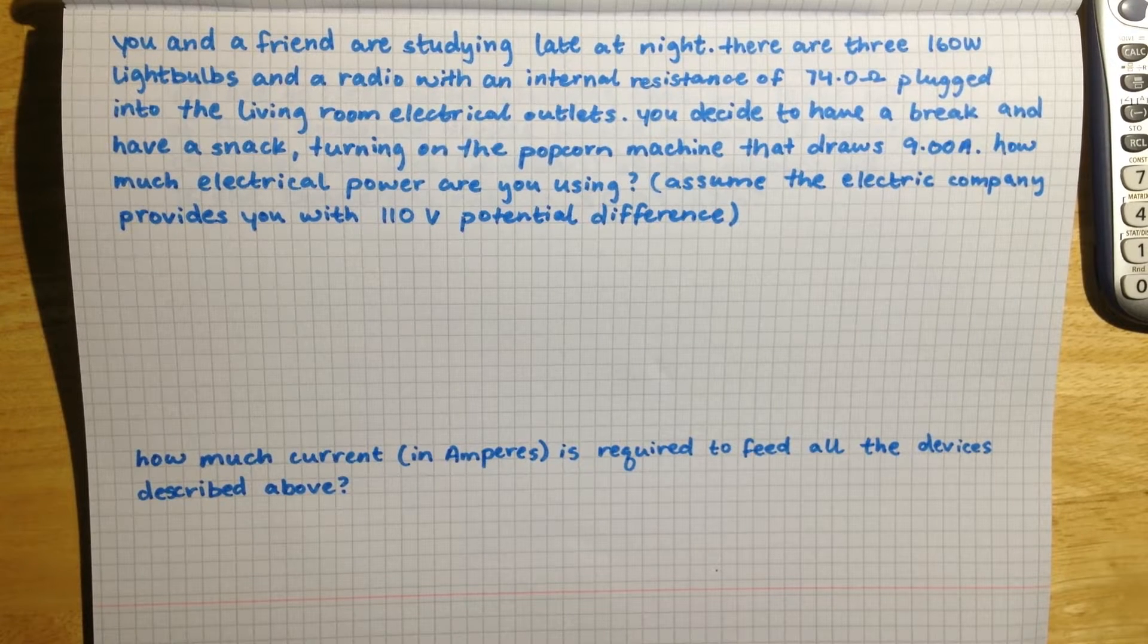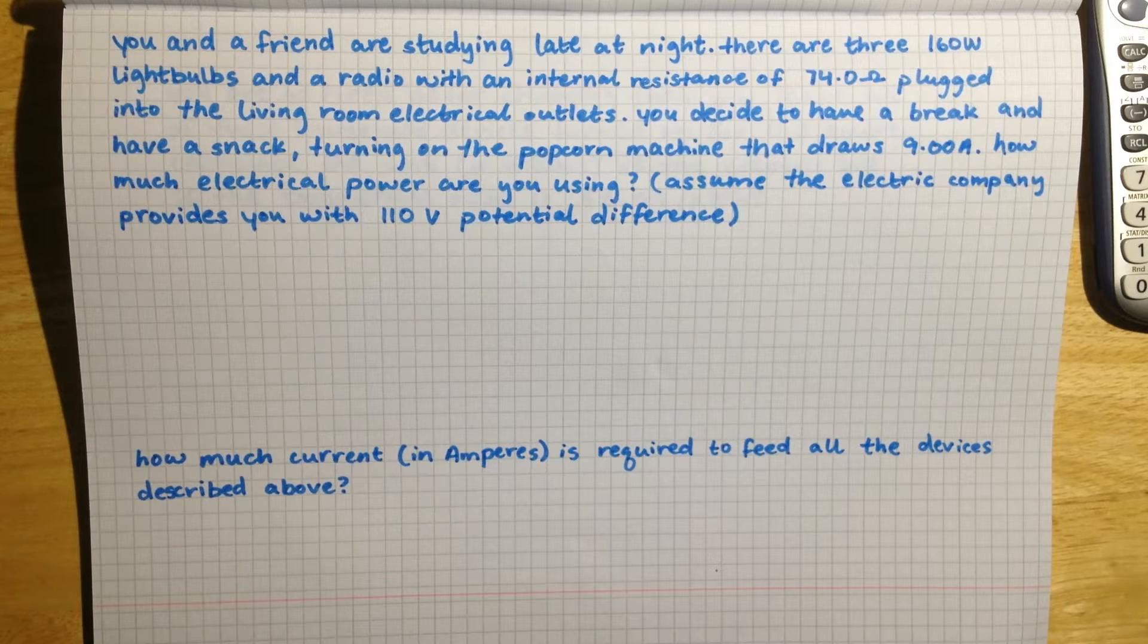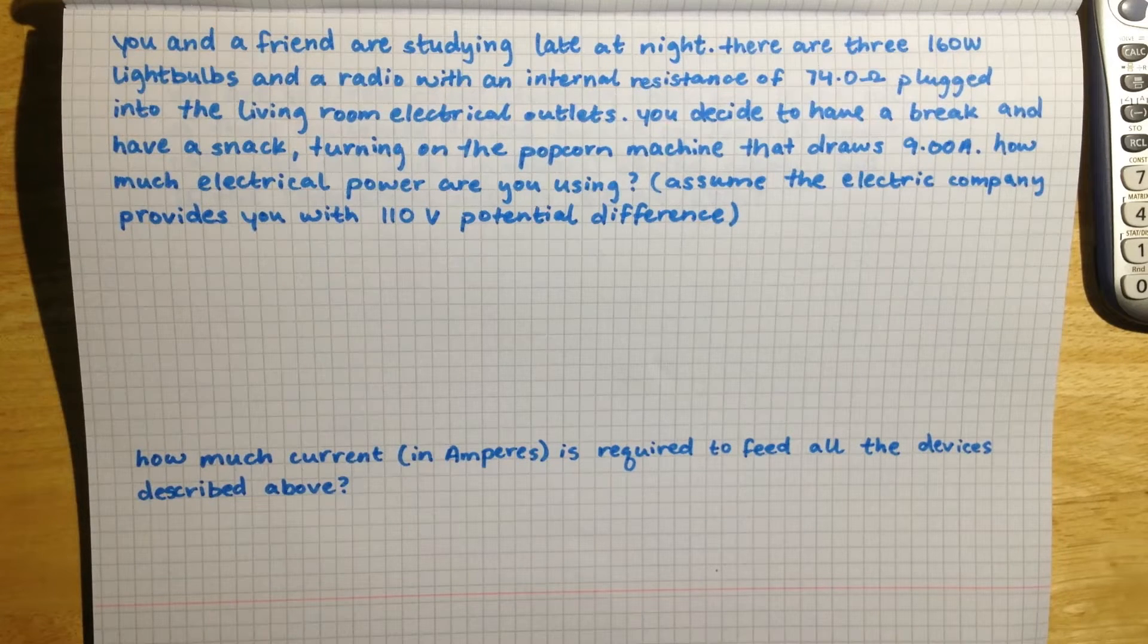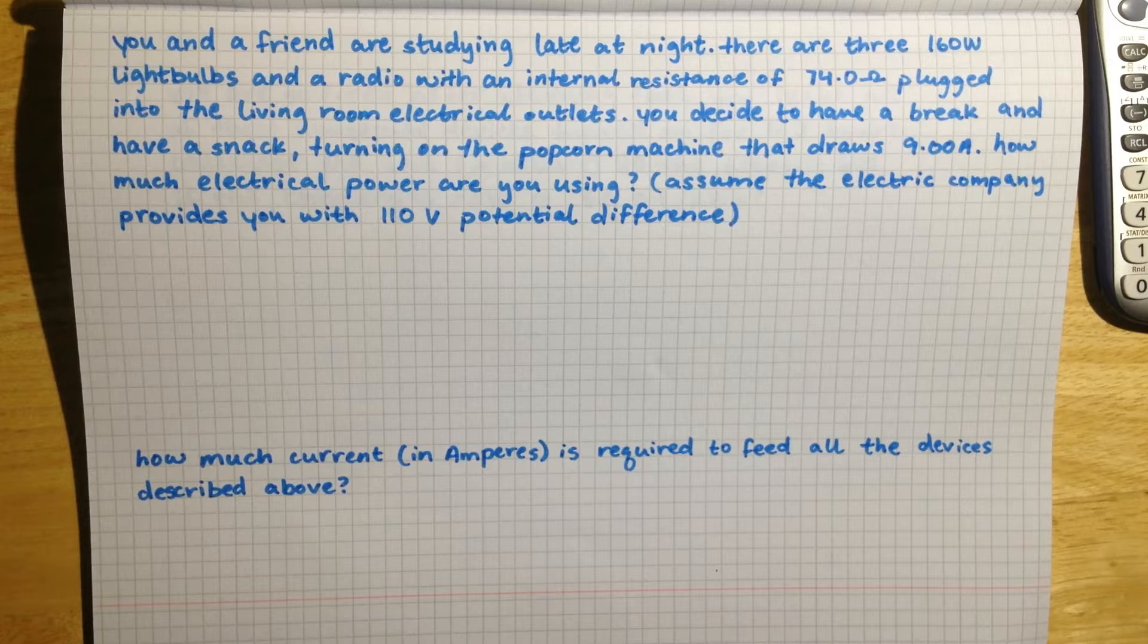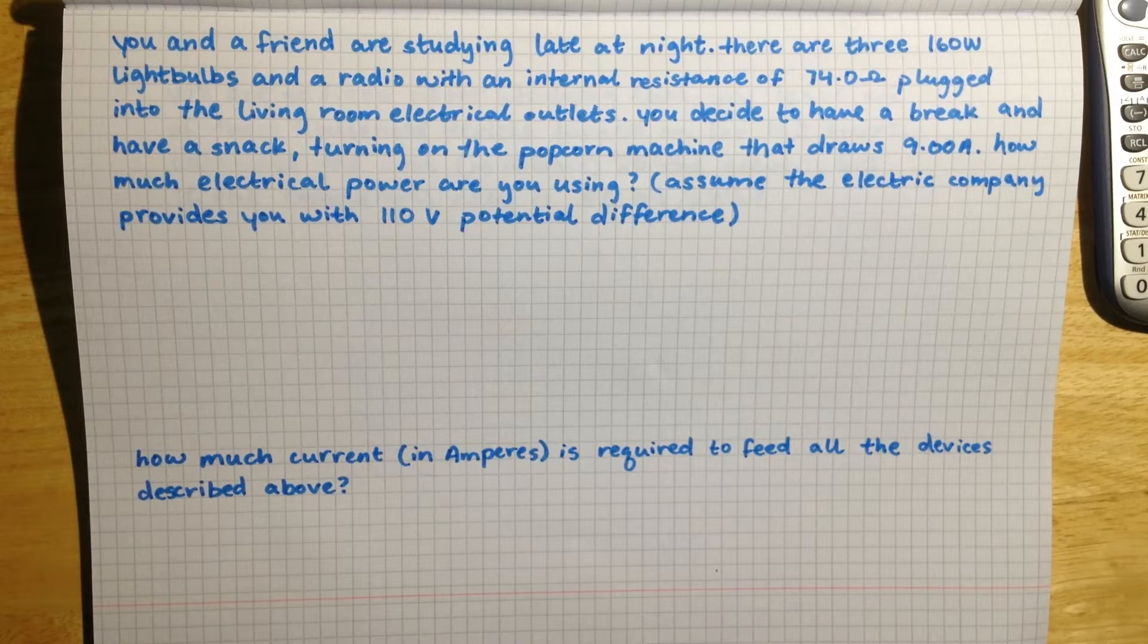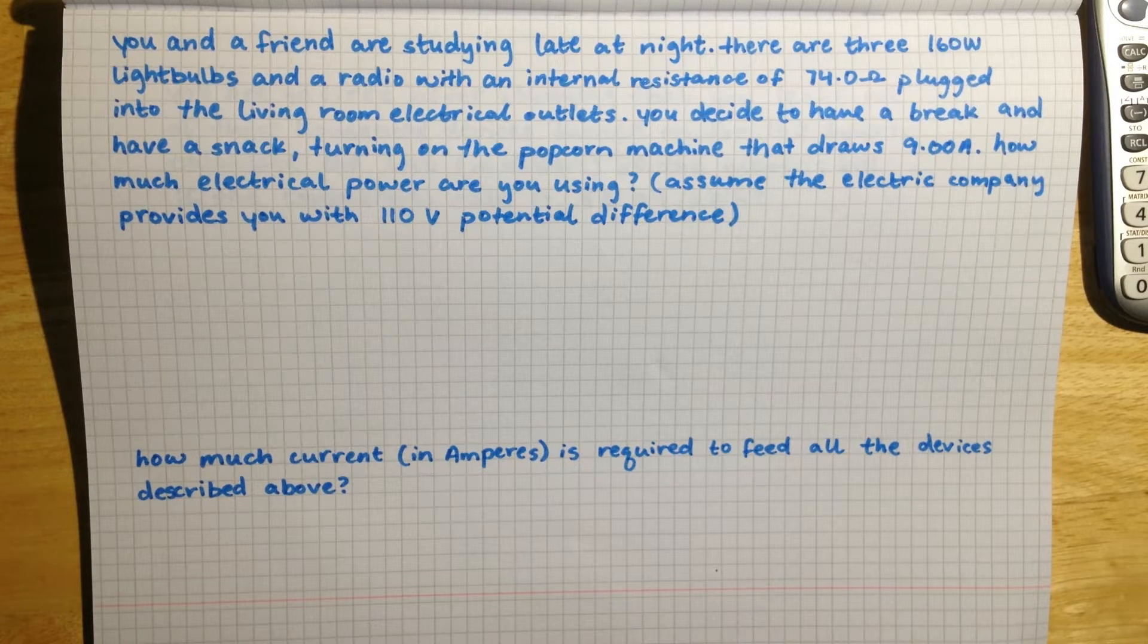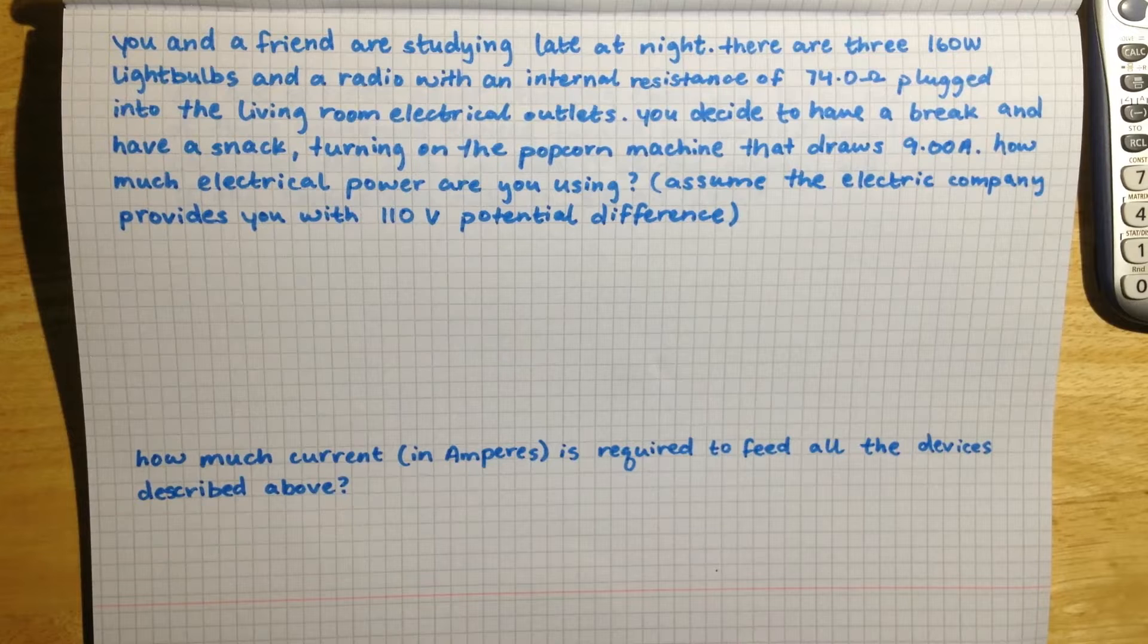Okay, so for this problem we are going to find the total power that all three of these different types of devices are using up, and we are going to find the power of each type of device separately and then add all the values up to get the total power that we are using up.